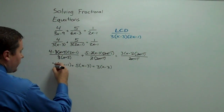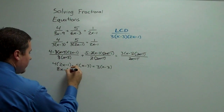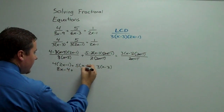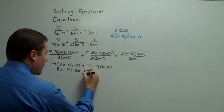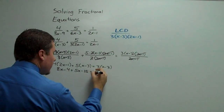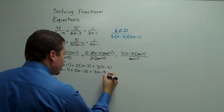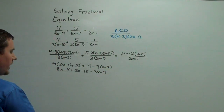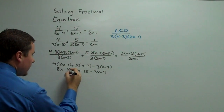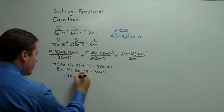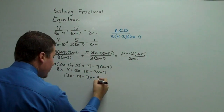Now distribute. 4 times 2x is 8x, minus 4, plus 5 times x is 5x, minus 5 times 3 is 15, equals 3 times x which is 3x, minus 3 times 3 which is 9. Combining like terms: 8 and 5 gives 13x, and negative 4 and negative 15 gives negative 19. So we have 13x minus 19 equals 3x minus 9.